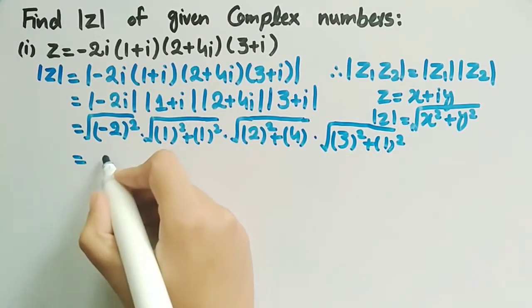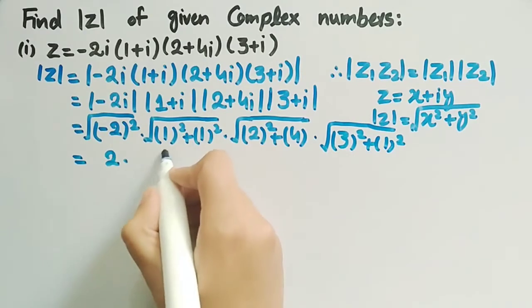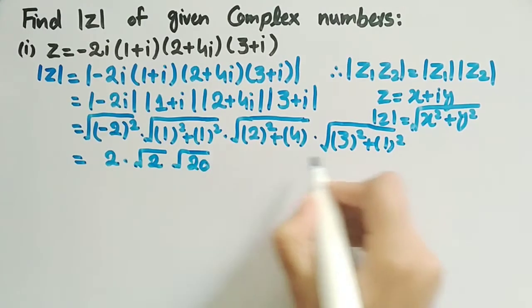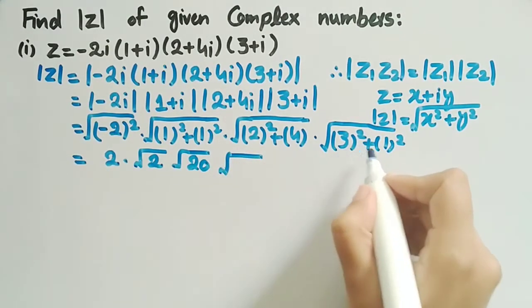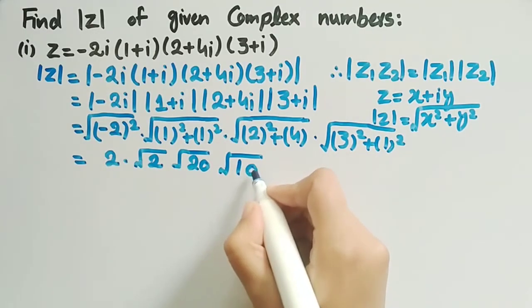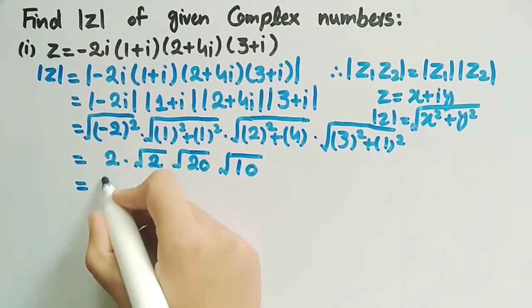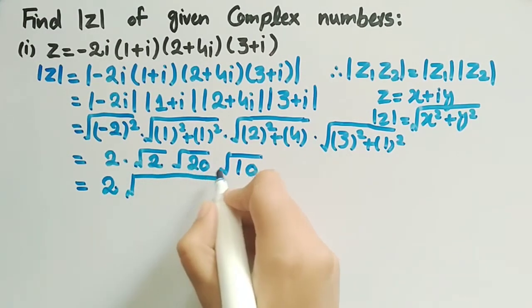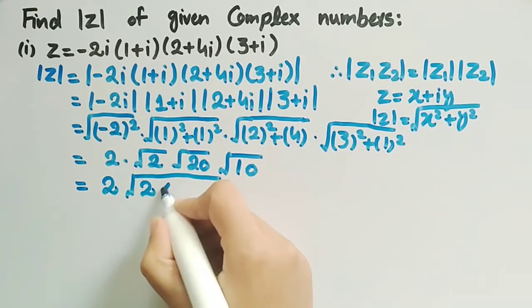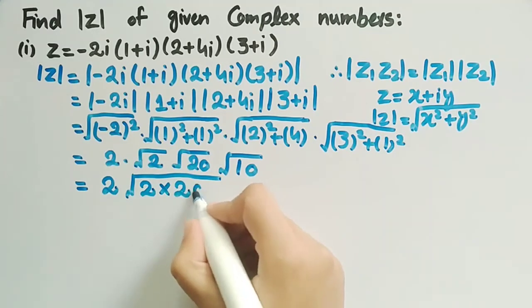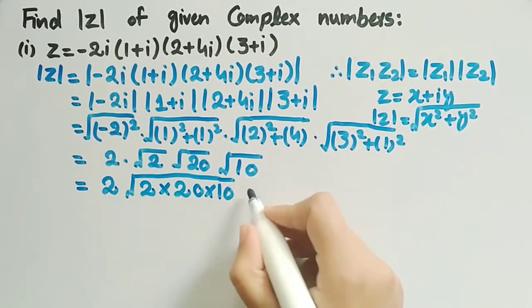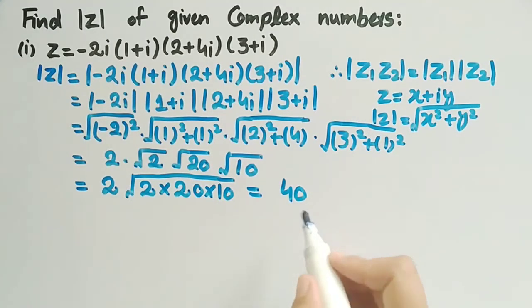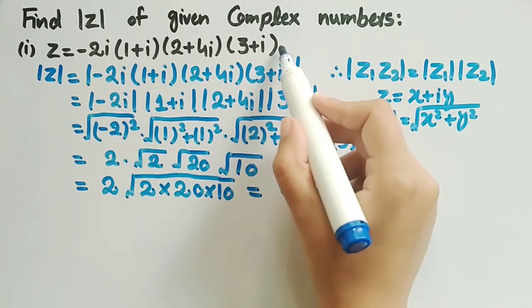These evaluate to 2, square root 2, square root 20, and square root 10 respectively — since 3 squared plus 1 squared equals 10. We can write this as 2 times square root 2, times square root 20, times square root 10, which gives us 2 multiplied by 20 multiplied by 10 under the square root, equal to square root of 400, which equals 40. So 40 is the modulus of the complex number z given in this equation.